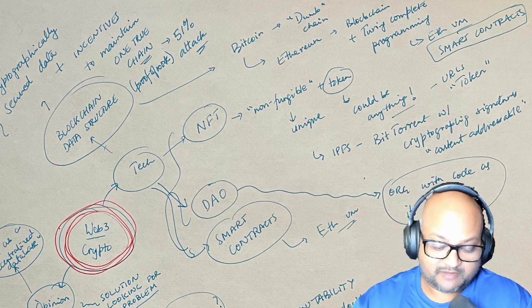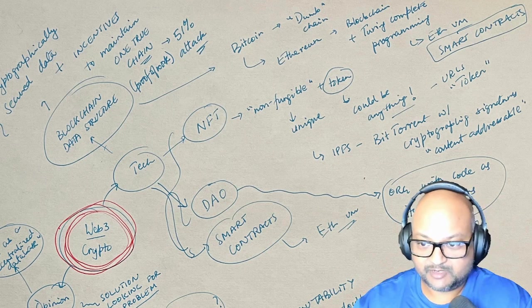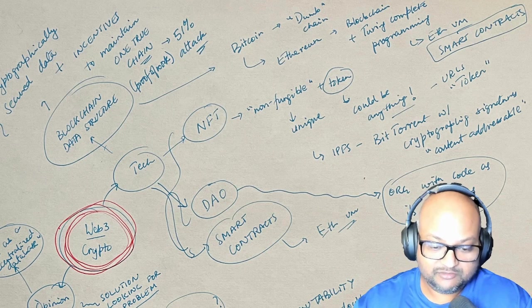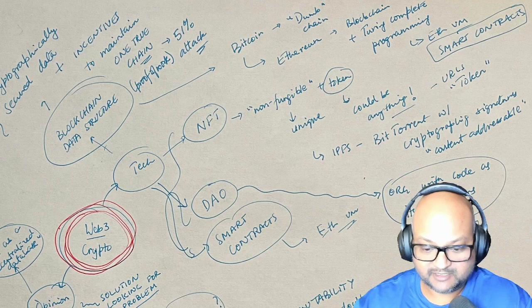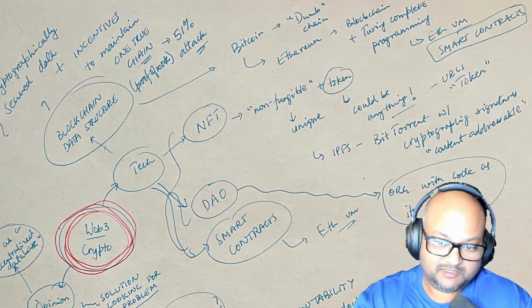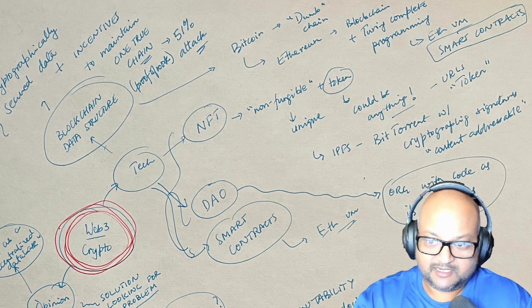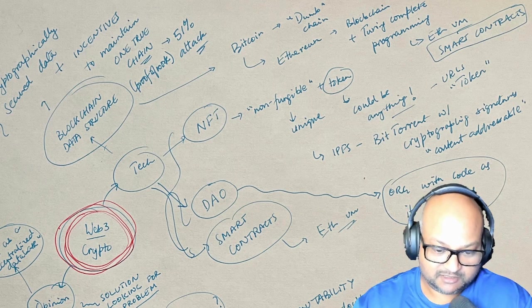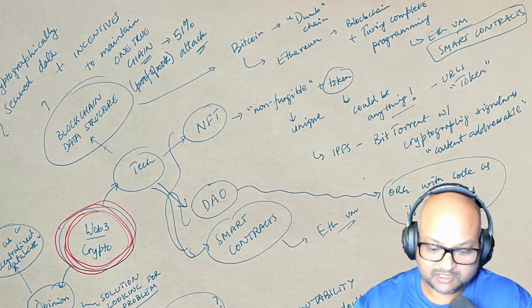And if you have a blockchain with a Turing complete programming model on top of it, you could use it to model pretty much anything. There are no limits once you have that. One of the main things you can do then is encode some sort of an organizational structure. And that's what DAOs are.